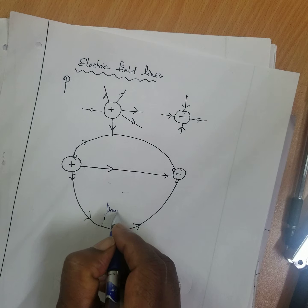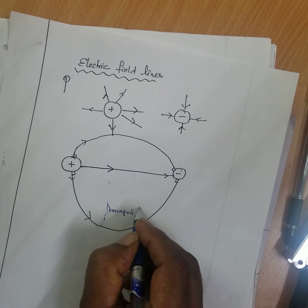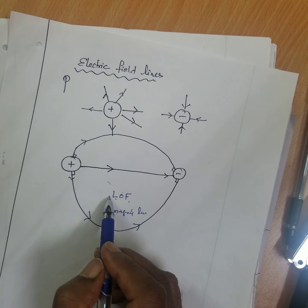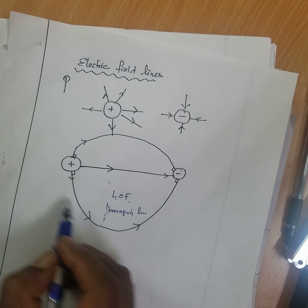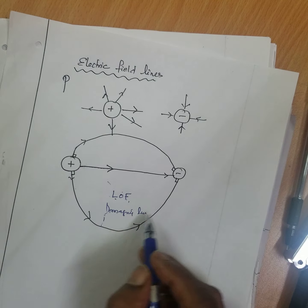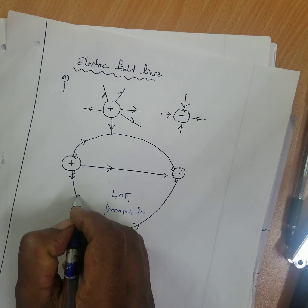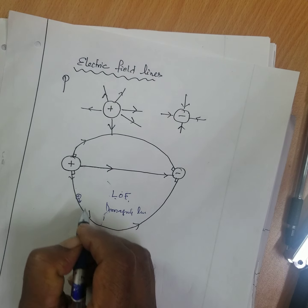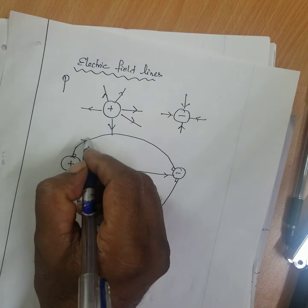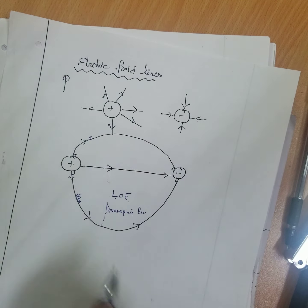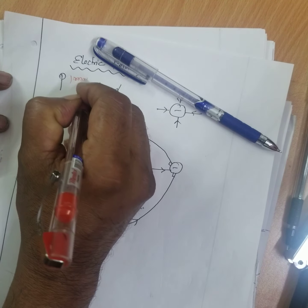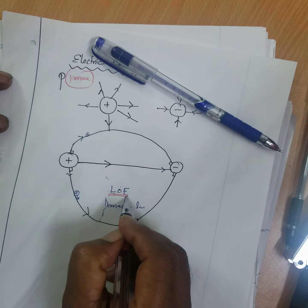These are called electric lines of force. It is an imaginary line, or a smooth curve, along which a unit positive charge moves or tends to move. If you keep a unit positive charge here, it will move along that direction.